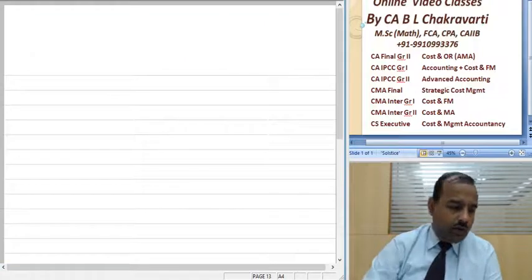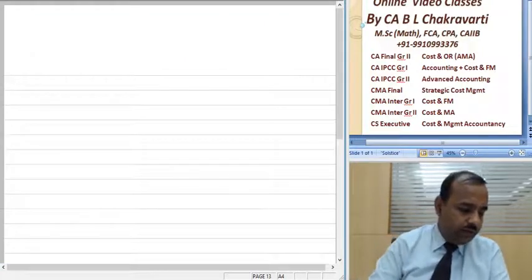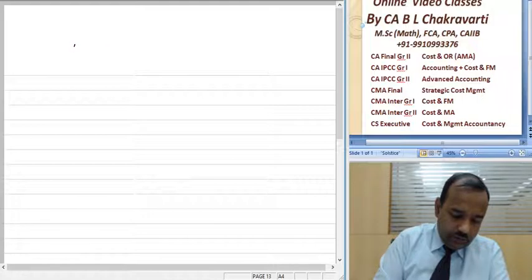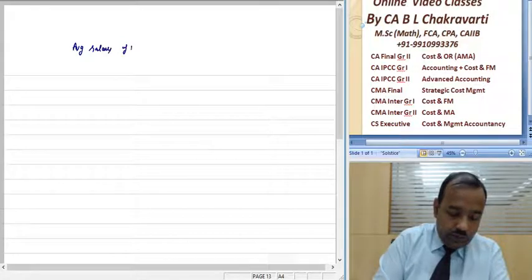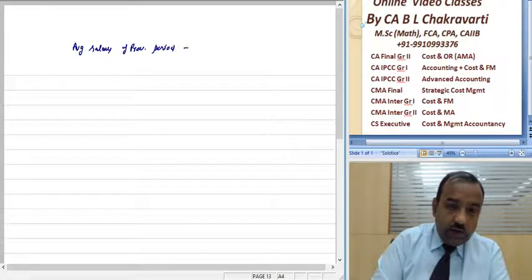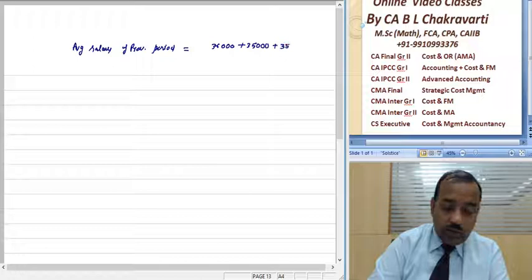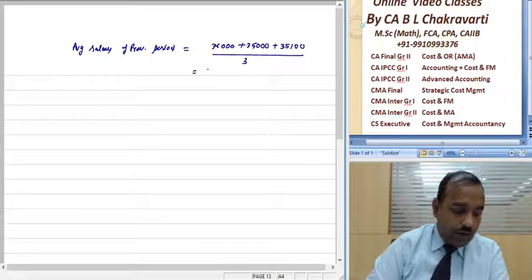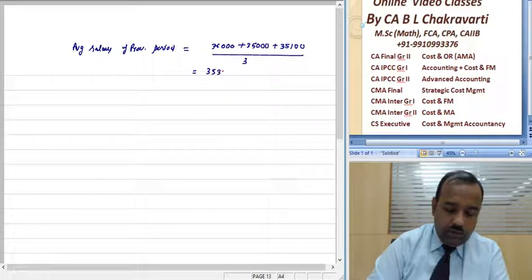So let's calculate. Average salary of the previous period: 36,000 plus 35,000 plus 35,100 divided by 3. If we calculate, we get 35,367.